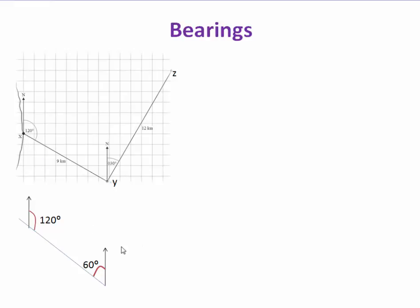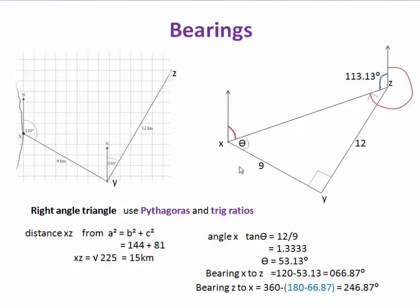In this question, a ship travels from port X to Y on a bearing of 120 degrees for a distance of 9 kilometres. Then from Y, it goes on a bearing of 30 degrees, 12 kilometres to point Z. If we redraw X to Y with north lines, we can see the supplementary angle is 60 degrees — since 120 plus 60 equals 180. This 60 plus 30 gives us 90 degrees, making the angle at Y a right angle.